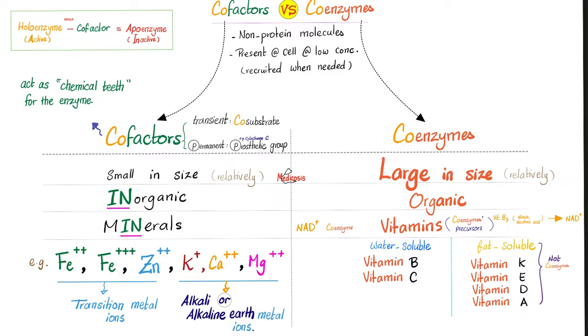If you want to be technical, vitamins are precursors to the coenzymes. For example, this coenzyme NAD comes from niacin, which is vitamin B3. So in that sense, vitamin B3 is a precursor to this coenzyme.